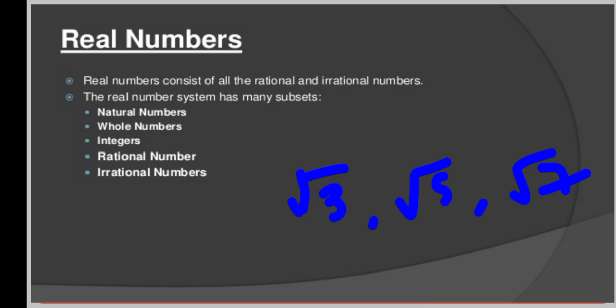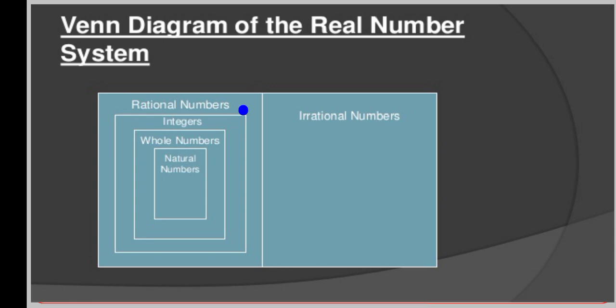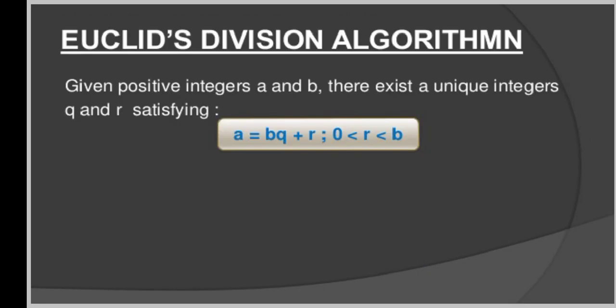Now we will talk about the most important part of this chapter. We will start with Euclid's Division Algorithm. So Euclid's Division Algorithm: if A and B are positive integers such that A equals BQ plus R, where 0 ≤ R < B. To understand Euclid's Division Algorithm, we need to first study Euclid's Division Lemma.